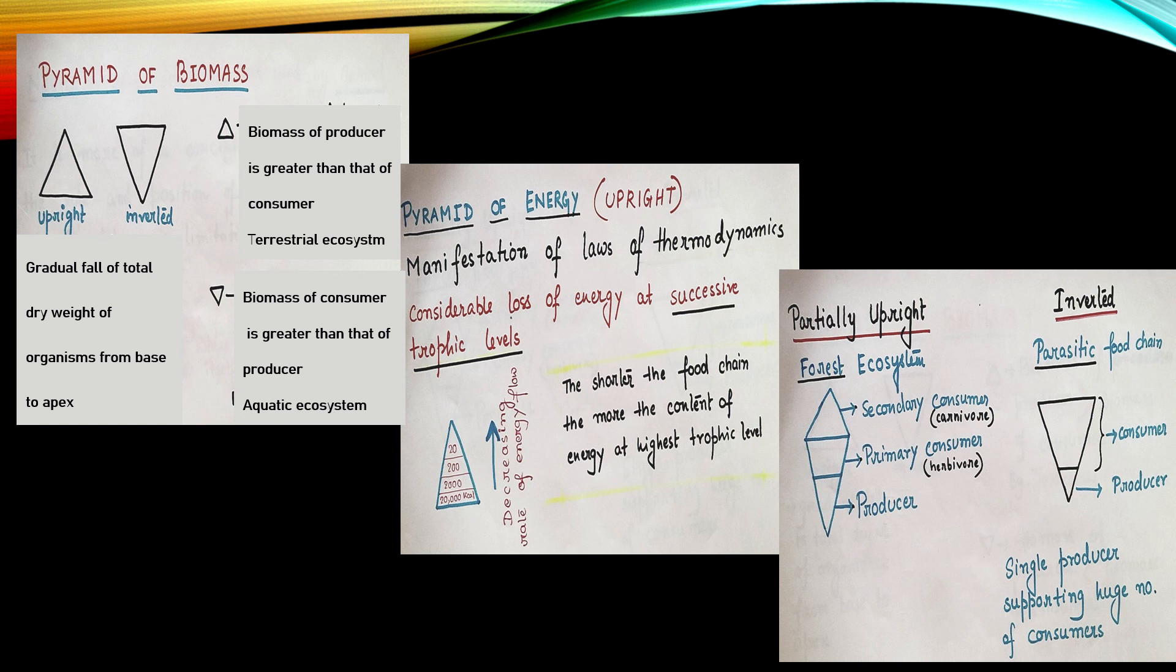On contrary in an inverted one we see the biomass of consumer is greater than that of the producer and the signature example of this type is an aquatic ecosystem. Here we see gradual fall of total dry weight of organisms from base to apex.